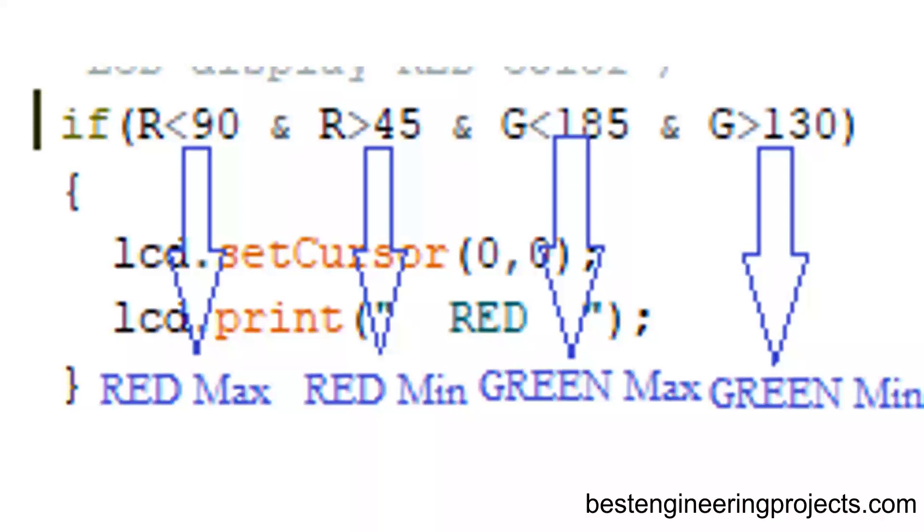Similarly, green frequency for red color is 135 and maximum green frequency for red color is 185. The color between these two frequencies must be red. The LCD will only show red if the value of R is between 45 and 90 and green between 130 and 185.